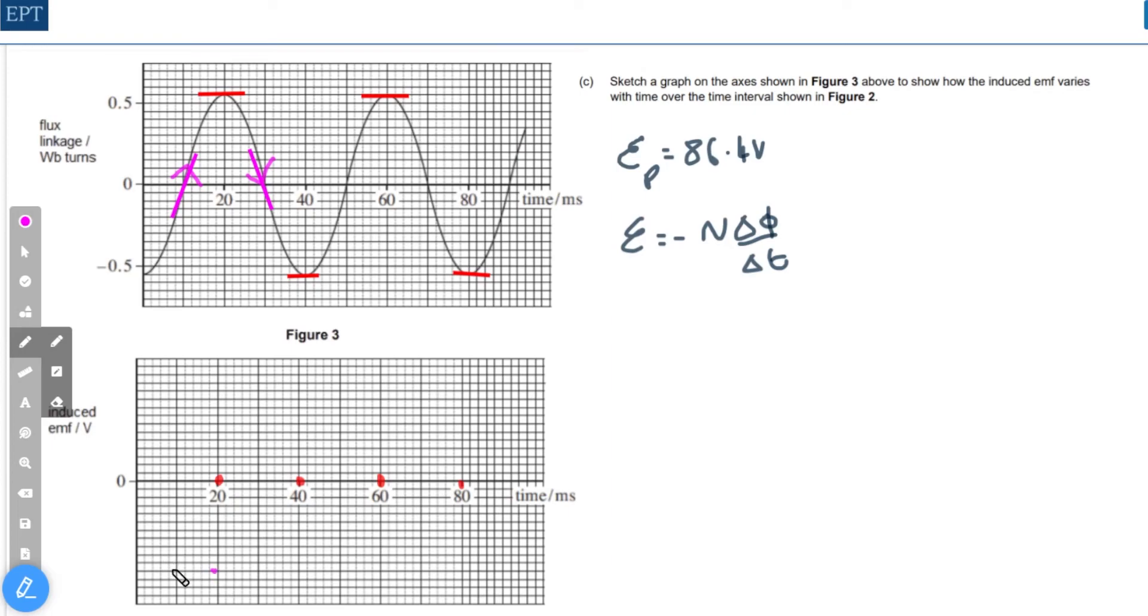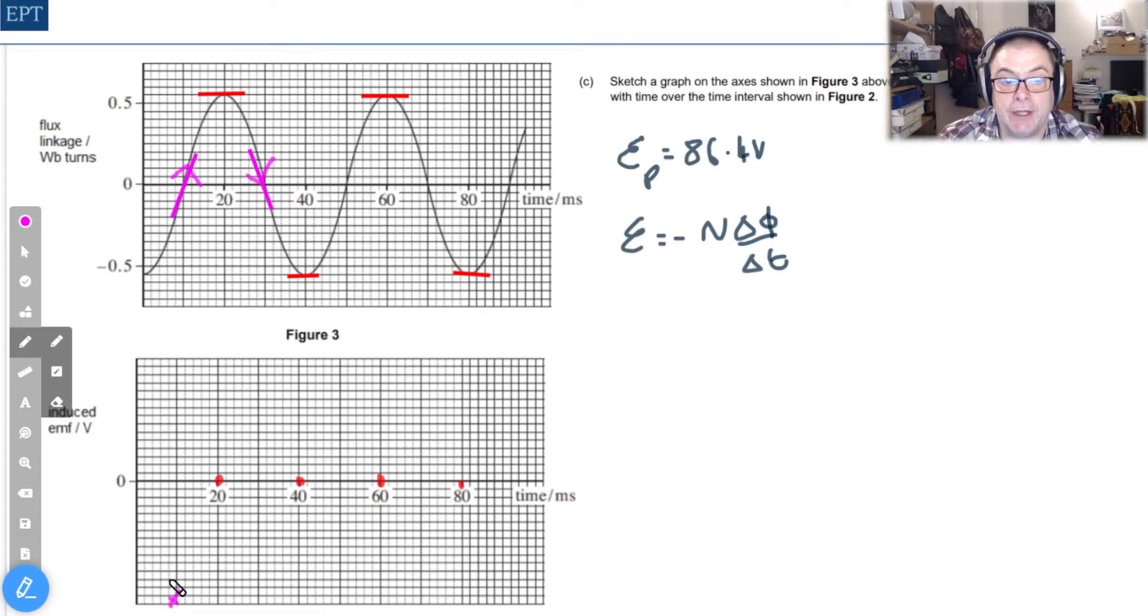This means that the first of our points going upwards we would expect it to be 86.4 volts but it's actually negative. In other words we have to add it in the negative section of the y.